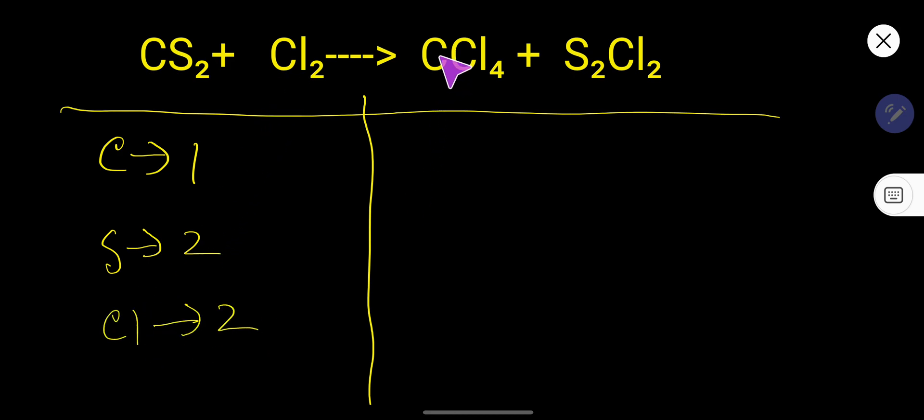In the right-hand side we have carbon that is one, we have chlorine here four, then here we have sulfur that is two, and here we have chlorine. Let us add here chlorine.